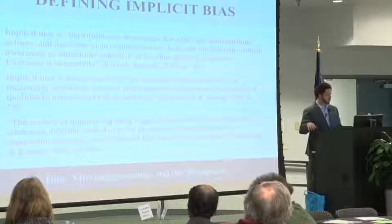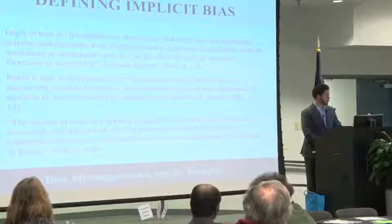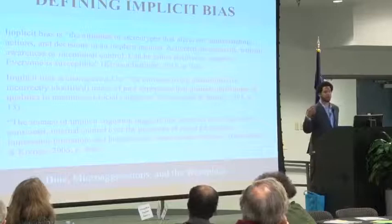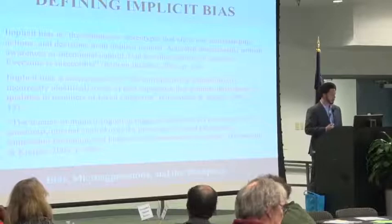Here are two definitions and one description of unconscious or implicit bias. The first one says: implicit bias is the attitudes or stereotypes that affect our understanding, actions and decisions in an implicit manner. Activated involuntarily — that's key — without awareness or intentional control, and they can be either positive or negative. Everyone is susceptible. Not somebody or some people — everyone. Key words here paint a picture: attitudes activated involuntarily, meaning we're not necessarily aware we hold them about other people.